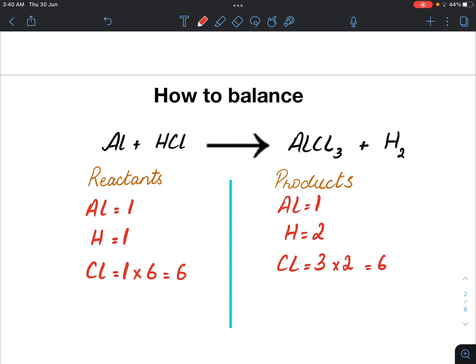Now here at the reactant site, we see that chlorine is in a molecule with hydrogen. So I multiply this one with six to give me six hydrogen atoms as well.